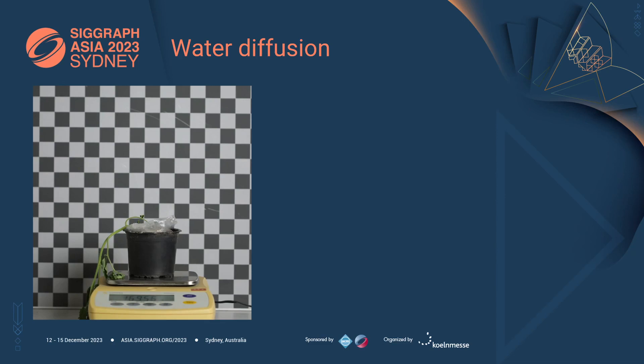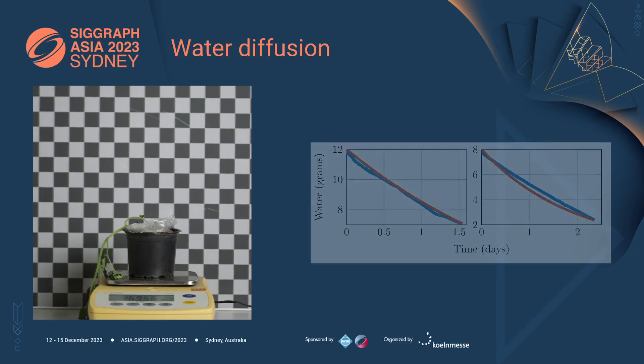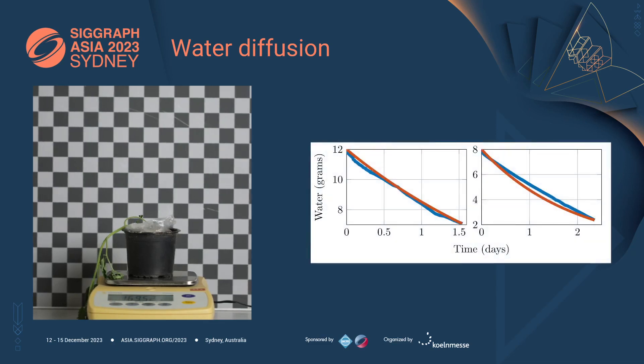Once the plant has completely wilted, we subtract the remaining weight from the time series to obtain the total amount of water inside the plant. The blue curves are the time series obtained from lab experiments, while the orange curves are the results of our simulations. While the match is not perfect, we see that our water model captures the overall behavior of the water inside a wilting plant.